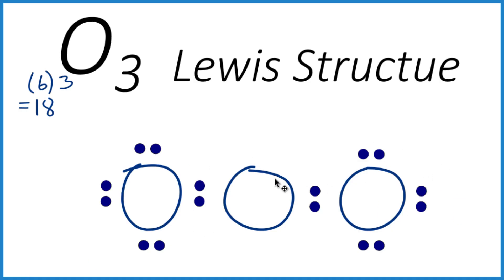Right now we've used 16 valence electrons for our ozone Lewis structure, but we have 18. So we have two more to use here. We're going to add our last two right here.